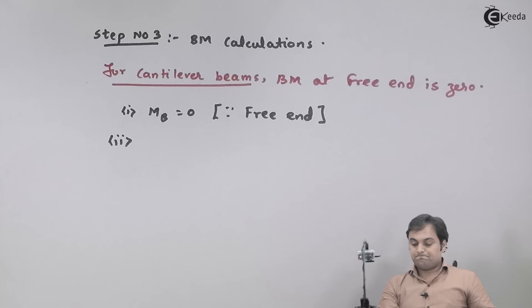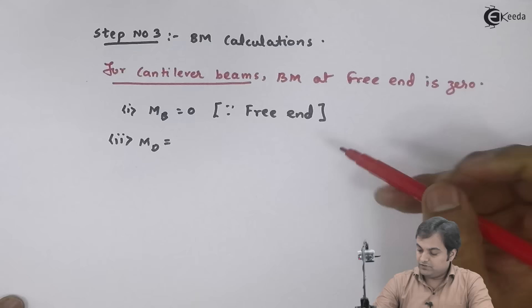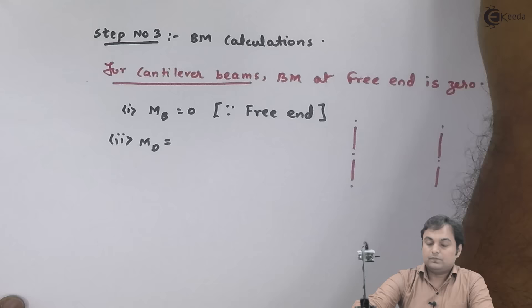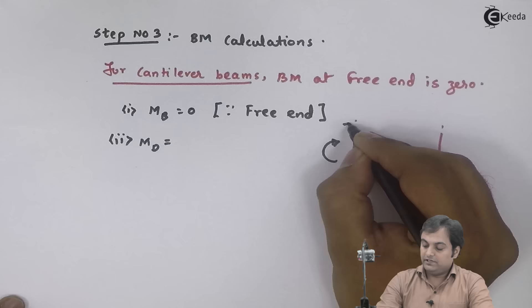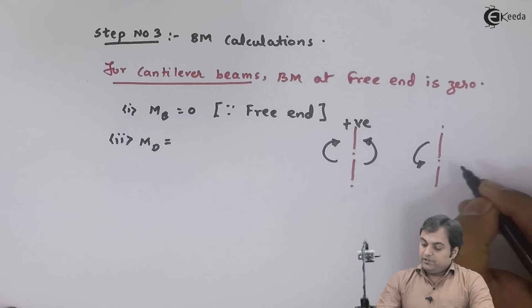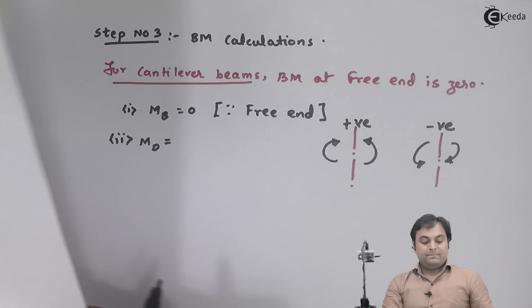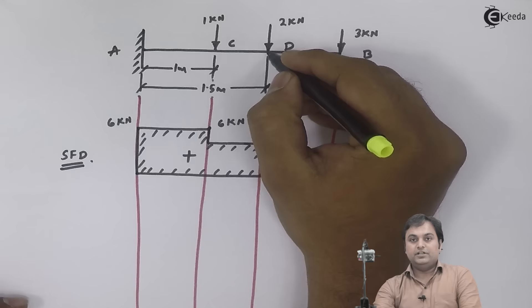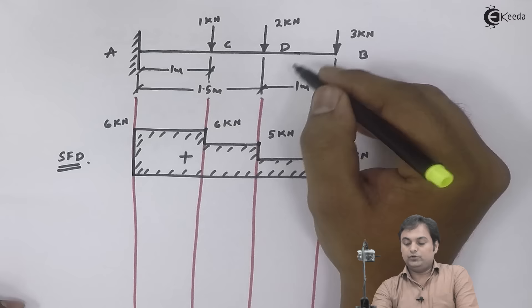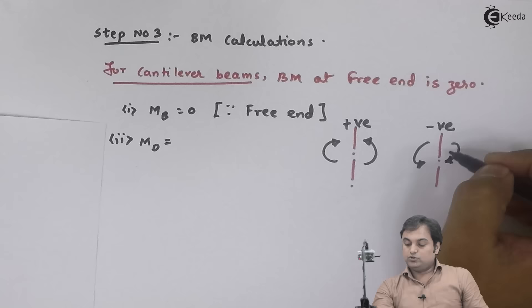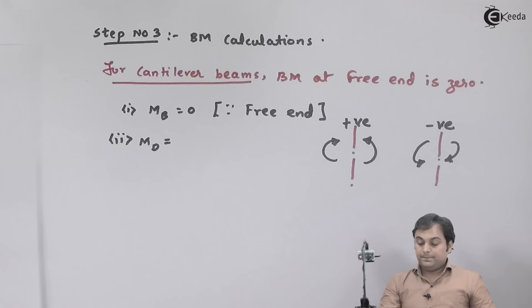Calculating bending moment at point D: the sign convention states clockwise moment to the right of section is negative. To the right of D there is only the 3 kN force, which produces a clockwise moment, so bending moment at D equals minus 3 into 1, which is minus 3 kilonewton meter.